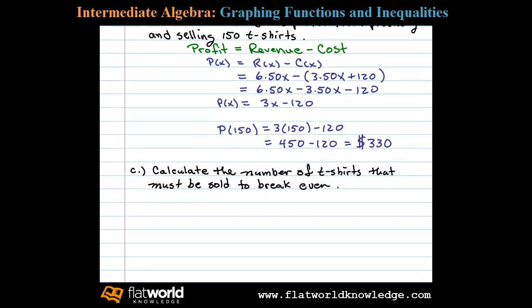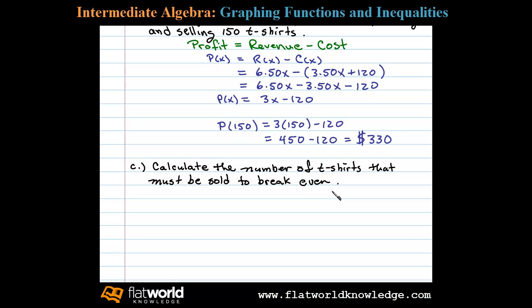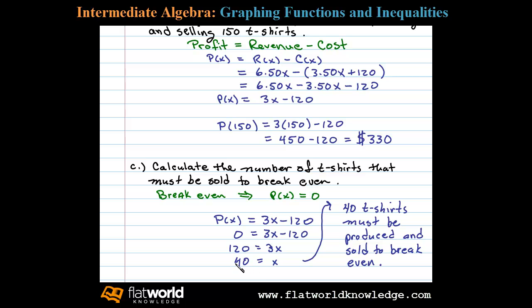Next, we're asked to calculate the number of t-shirts that must be sold to break even. To break even, profit is equal to 0. We found that our profit function was 3x minus 120. So we substitute 0 in for the profit and solve for x. Adding 120 on both sides, we have 120 equals 3x. Dividing both sides by 3, we have x equals 40. Therefore, 40 units must be produced and sold to break even.